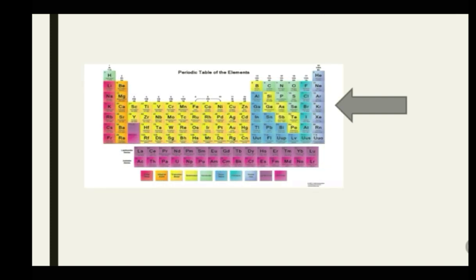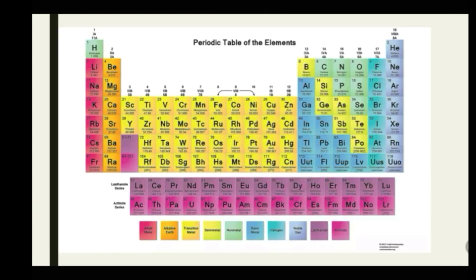Before that, you need a periodic table. Let's take a look at the charges of elements by group: Group 1 is +1, Group 2 is +2, Group 18 (or 0) is 0, Group 17 is -1, Group 16 is -2, Group 15 is -3, Group 14 can have +4 or -4 since it can both lose and gain its four valence electrons, and Group 13 has a charge of +3. Take notes of these because we'll be using them.